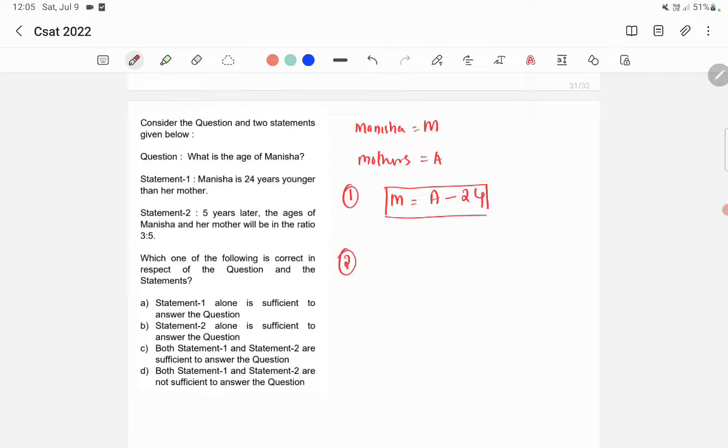Statement 2 says that 5 years later, Manisha's age will be M plus 5 and her mother's age will be A plus 5. So this is in the ratio 3 to 5.